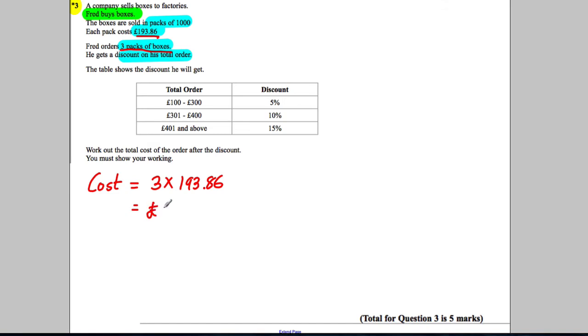So we get ourselves £581.58. Now looking here, what therefore is our total order? Well, our total order is above £401, so we're going to get a 15% discount. So applying this discount, if you want to—